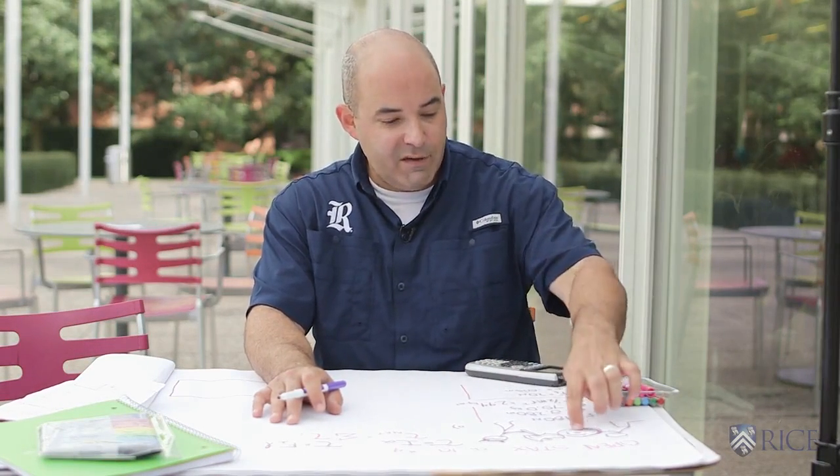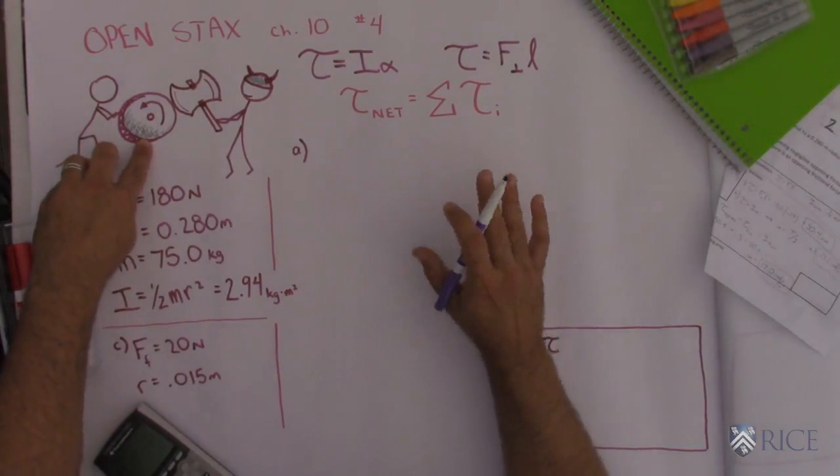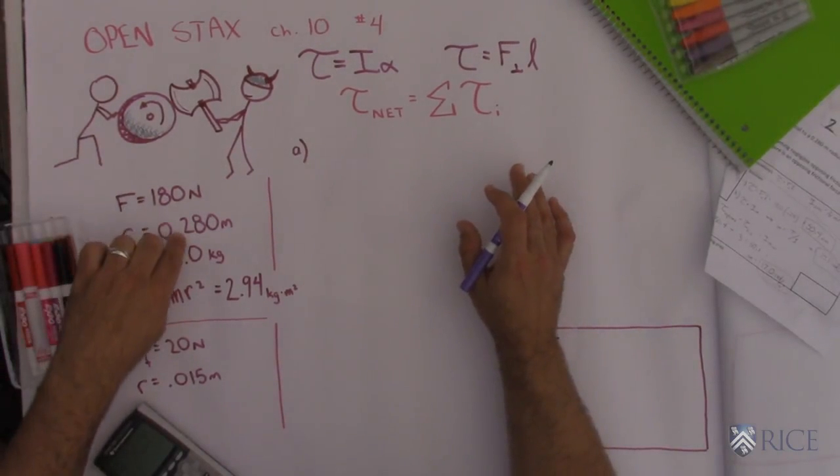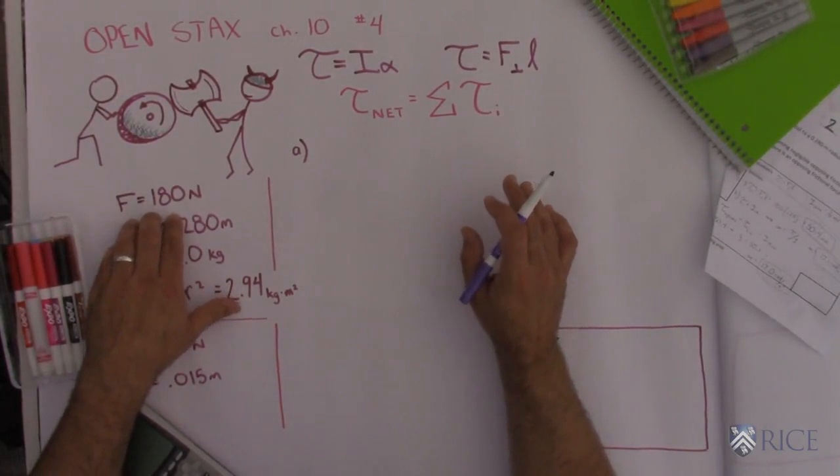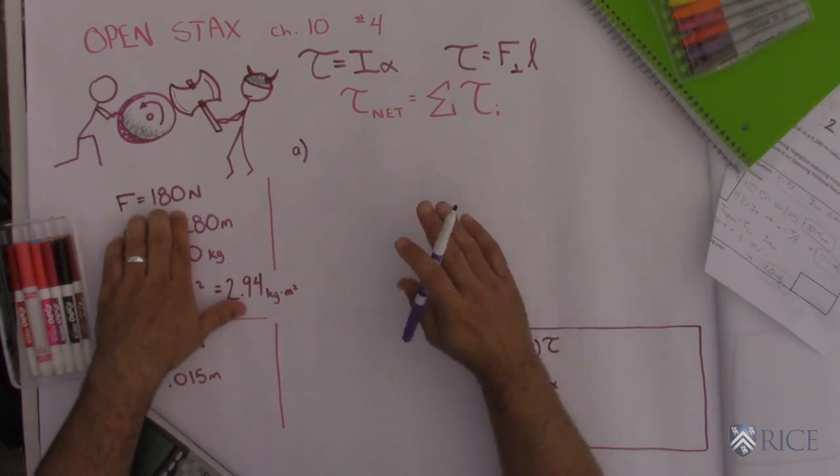It starts out, there is a 75 kilogram grindstone. They gave us the radius and they tell us if you apply a force of 180 Newtons with that information, we could find three different things.